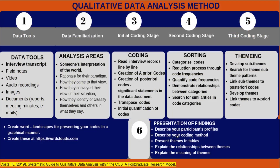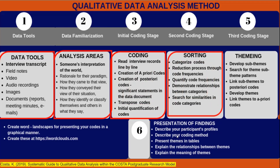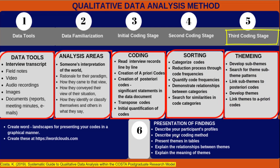For Acosta, 2019, he made a comprehensive qualitative data analysis framework. Accordingly, it must start from the proper utilization of data tools such as the interview transcript, field notes, audio recordings, and other documents. On the second phase, a qualitative researcher must do the data familiarization before doing his or her initial coding stage, the sorting, and finally the theming, which is the third coding stage.